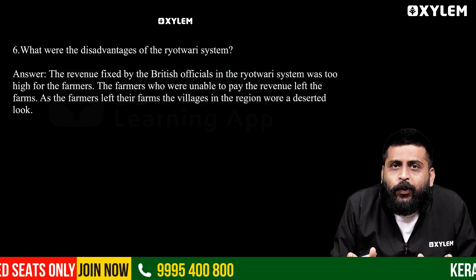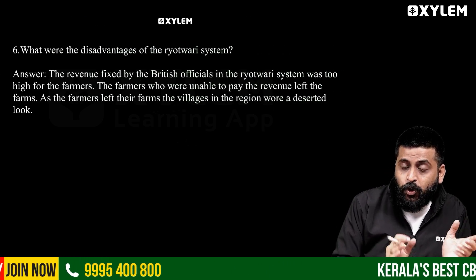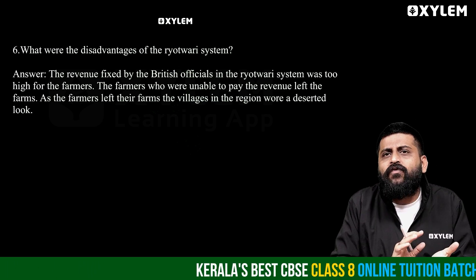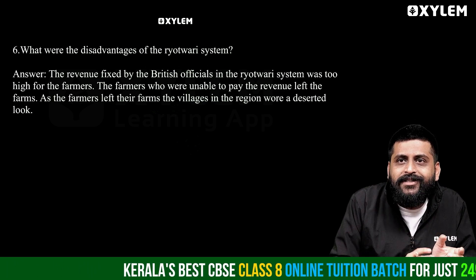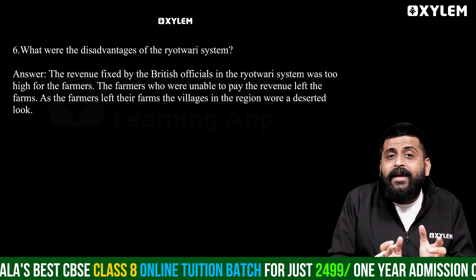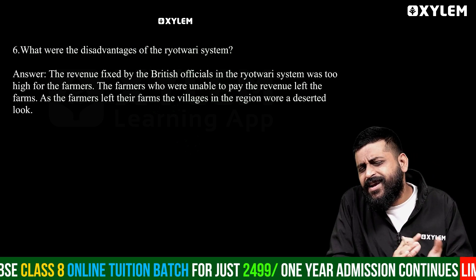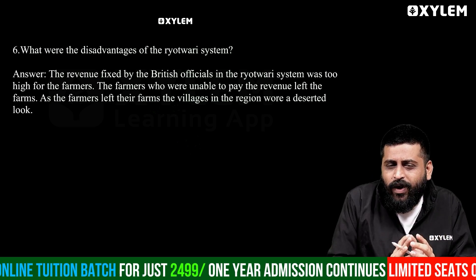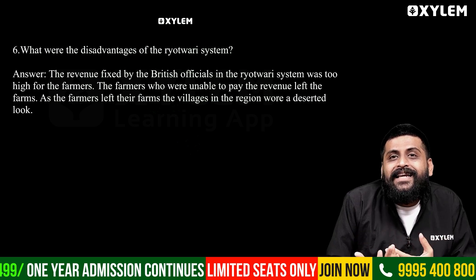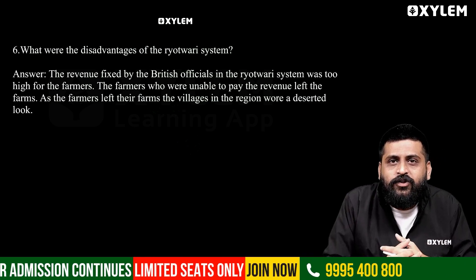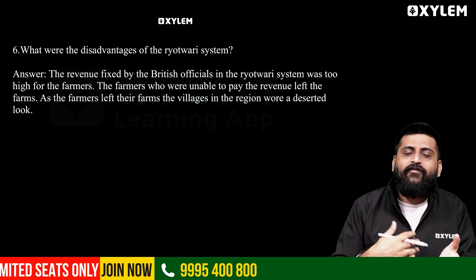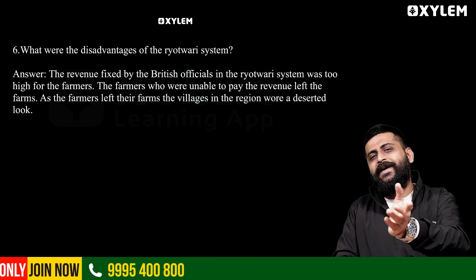The next question: what were the disadvantages of the Ryotwari system? The revenue fixed by the British officials in the Ryotwari system was too high for the farmers. Farmers unable to pay the high revenue left their farms.